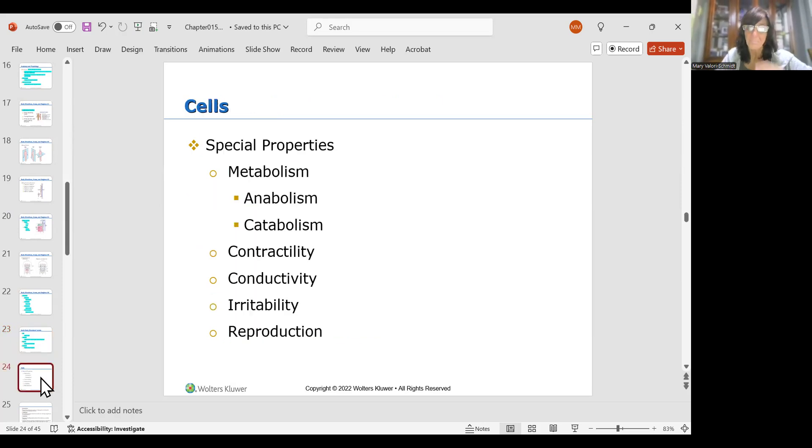When we talk about cells, there are certain things that cells are able to do. Cells are able to manage metabolism and they can perform anabolism or catabolism which we'll talk about in a minute. They have the ability to be contractile, they have contractility, they have conductivity, irritability, and they can reproduce. So let's do one of these at a time.